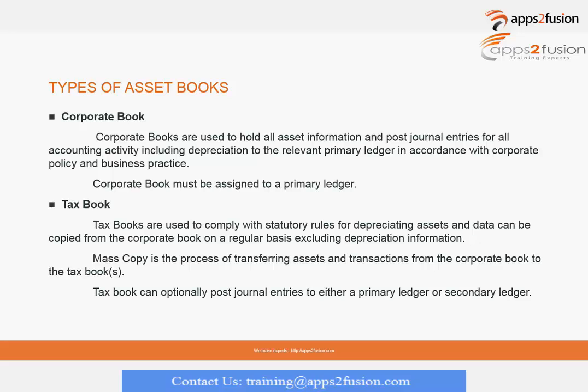A corporate book is assigned to a primary ledger. A tax book can optionally post journal entries to either a primary ledger or a secondary ledger as well.